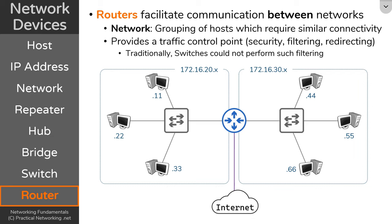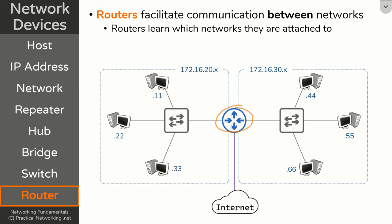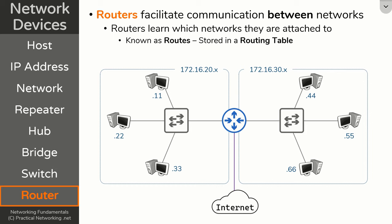Since routers sit on the boundary between networks, they provide a logical location to apply security policies. This type of security filtering isn't traditionally available on switches. These days, there are modern switches that can do such filtering, but it is generally accepted that devices on the same network don't typically need filtering for traffic traveling within the network. If you had devices that needed different types of connectivity, you'd want to place them in different networks. The network boundary is what is meant to be the logical separation of devices. The way routers work is that they learn which networks they are attached to — stored in a routing table — which is all the networks a router knows about, used to funnel traffic out the appropriate interface.